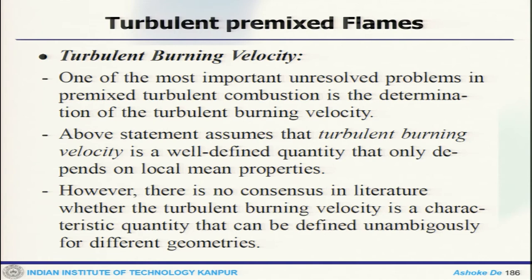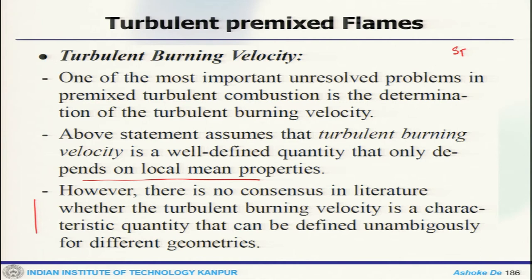When there is a premixed flame front, on top of the laminar burning velocity, you get the turbulent burning velocity. The turbulent burning velocity depends on the local mean properties. However, there is no consensus in the literature whether the burning velocity is a characteristic quantity that can be defined unambiguously for different geometries. Flame structure changes and is dependent on turbulent length and time scales. The large-scale structure will impact the flame front differently compared to different length scales, and flame surface deformation would be different.